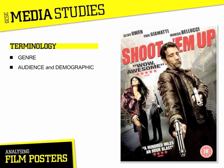Demographic is a cross-section of society and may be split up by gender, age range, hobbies or interests, nationality, sexuality and any other number of variables. This poster is targeted roughly at males aged 15 to 30 because it features guns, action and the picture of Monica Bellucci suggesting a sexy female character. This group of people is most likely to want to watch this sort of film.